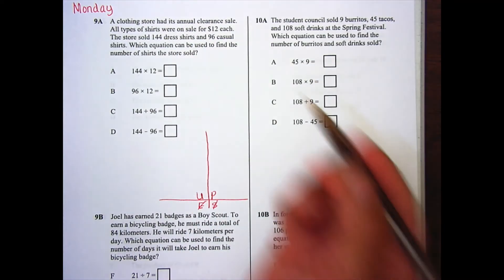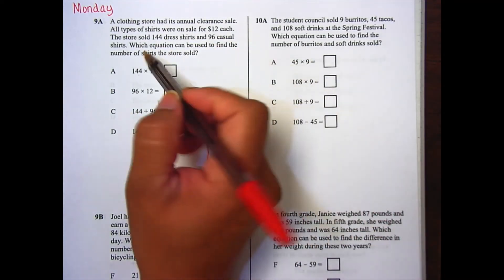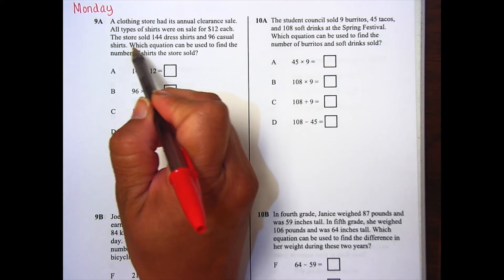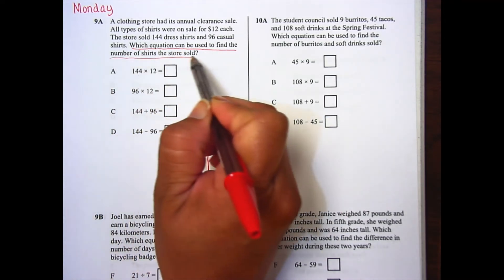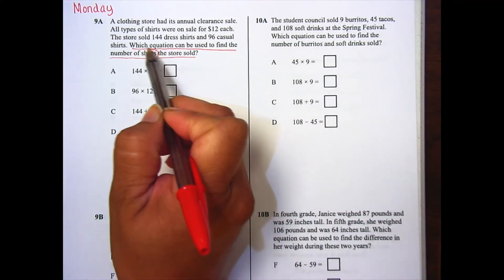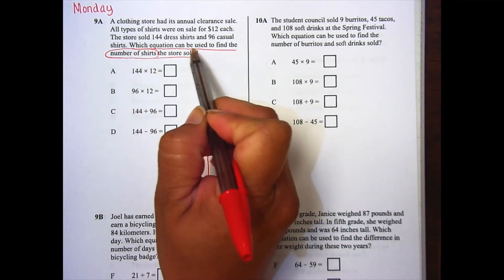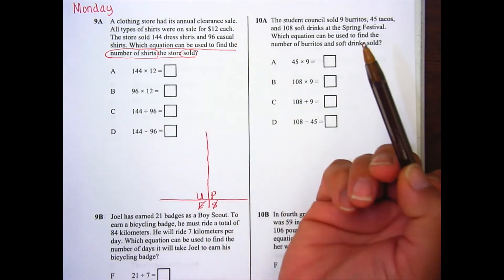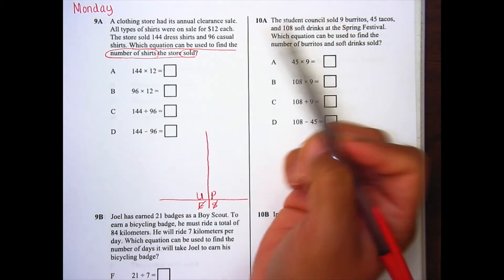Our second step is to underline the question. So as you underline the question, make sure you read it again. Which equation can be used to find the number of shirts the store sold? So my question is asking me to find the number of shirts sold. So we want to find out how many shirts were sold.